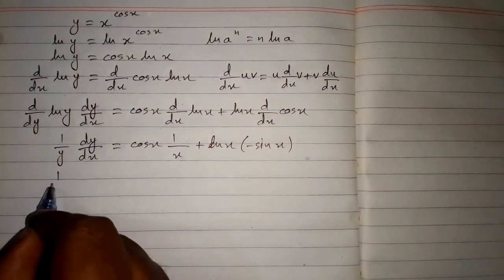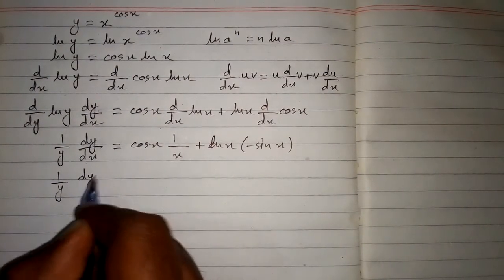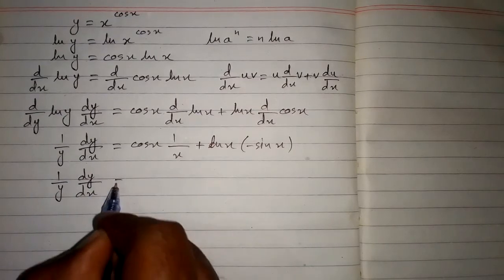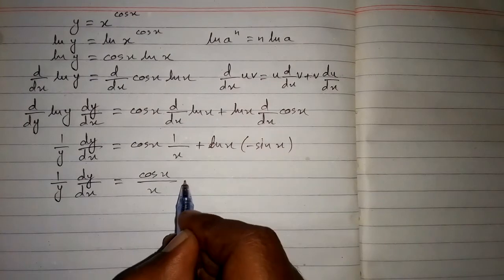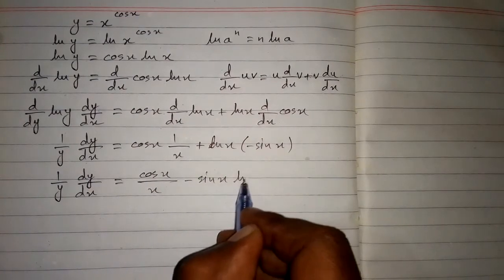Now we have 1 upon y times dy by dx equals cos x upon x minus sin x ln x.